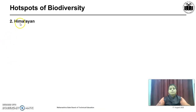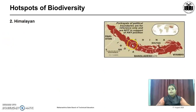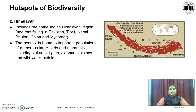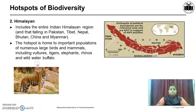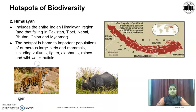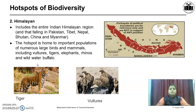The second hotspot of biodiversity is Himalaya. It includes the entire Indian Himalayan region and areas falling in Pakistan, Tibet, Nepal, Bhutan, China and Myanmar. The hotspot is home to important populations of numerous large birds and mammals including vultures, tigers, elephants, rhinos and wild water buffalos. These all are found in the Himalayan region in abundance.